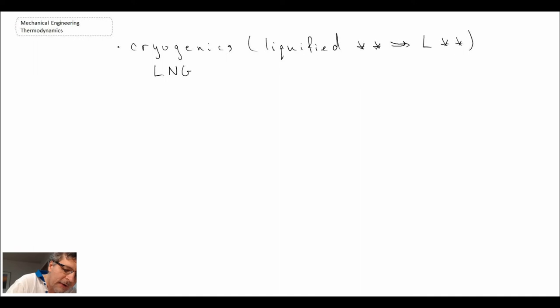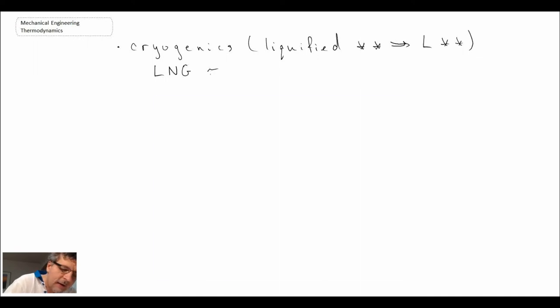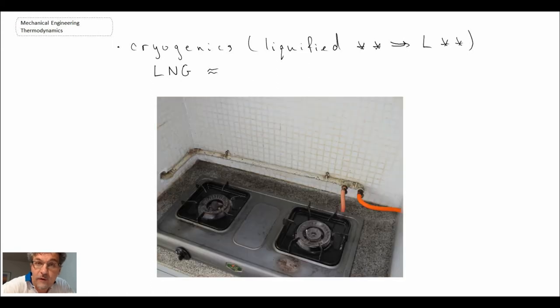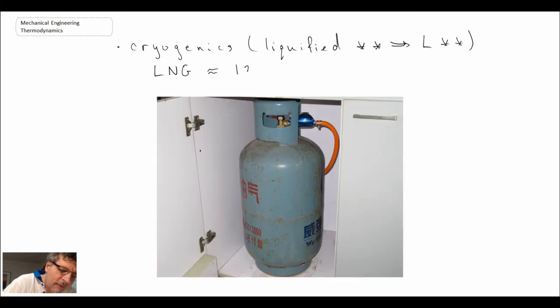So a popular one nowadays is LNG, liquefied natural gas, and that is used to distribute natural gas from different areas of the world to other areas where it's used for electricity generation, heating of homes, and cooking. The temperature at which LNG or liquefied natural gas occurs at is about 120 kelvin.